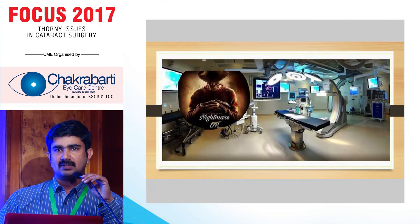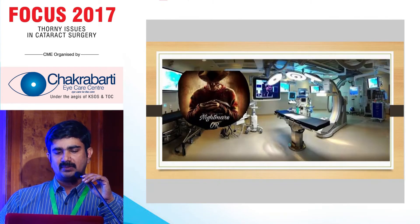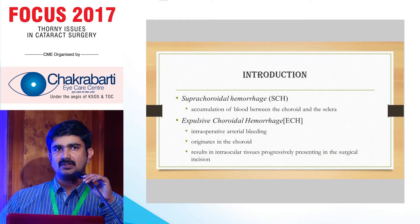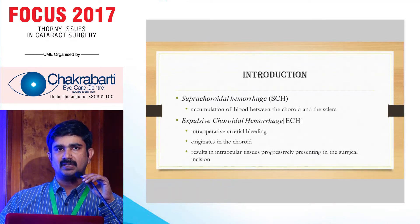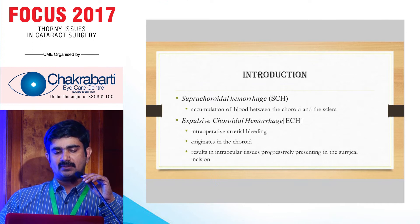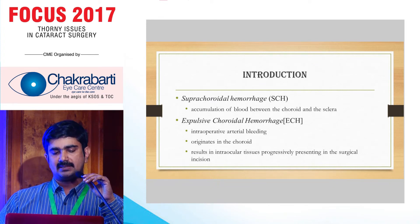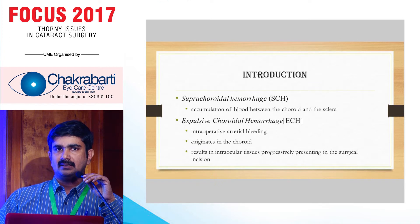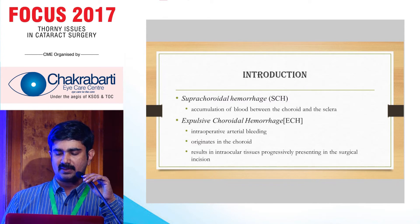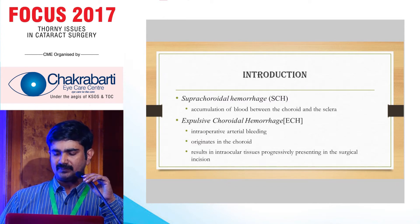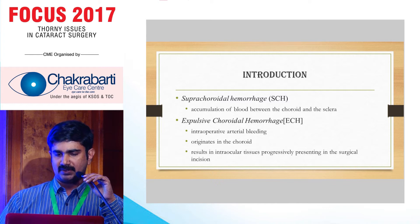Suprachoroidal hemorrhage by definition is accumulation of blood between the choroid and the sclera, but not all suprachoroidal hemorrhages are expulsive hemorrhages. Expulsive hemorrhage is what you get during surgery because of the break in the choroidal ciliary arteries, resulting in a massive bleed which pushes the intraocular contents out through the surgical incision. That is only known as expulsive hemorrhage.